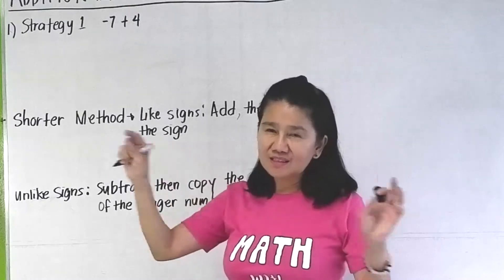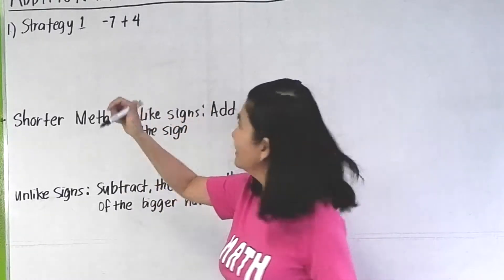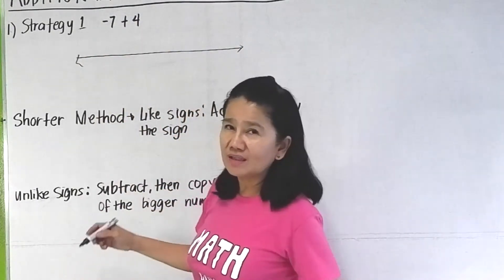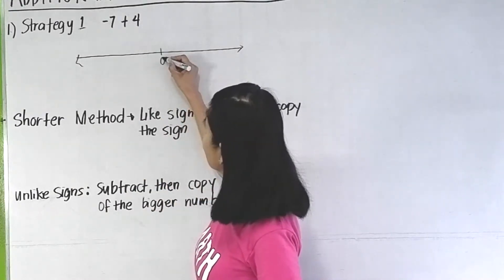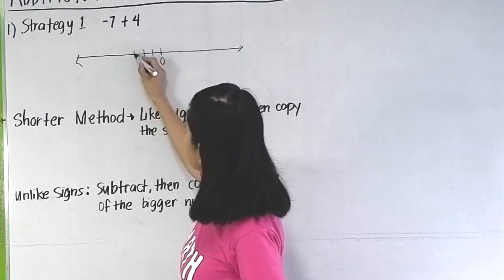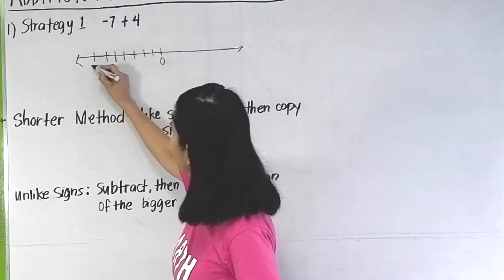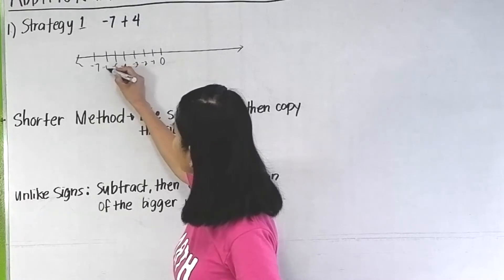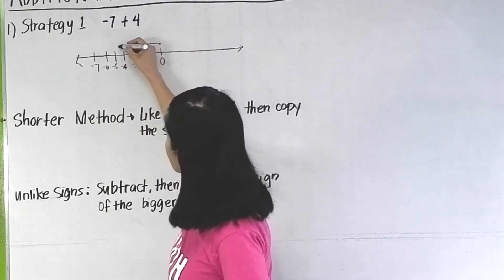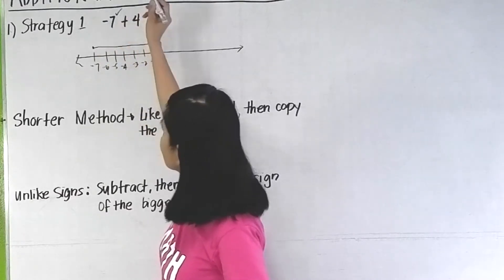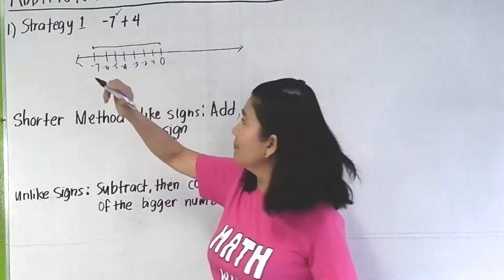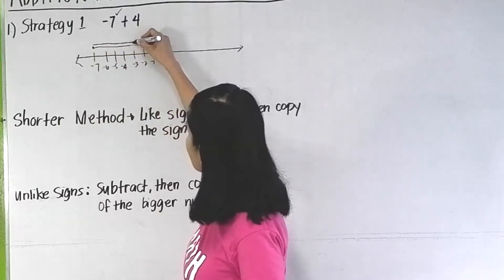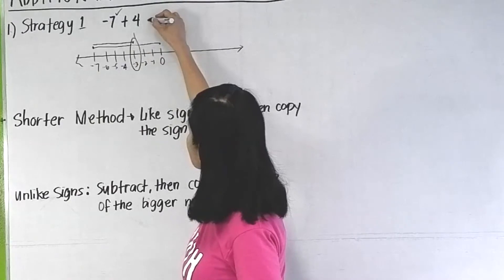Strategy number one is using the number line. Let us say you're asked to add negative 7 plus 4. You go to 0, then jump 1, 2, 3, 4, 5, 6, 7 — so you move from 0 to negative 7. Stop. That's negative 7. Then you add 4, moving 4 units to the right: 1, 2, 3, 4. You stop here. So, the answer is negative 3.